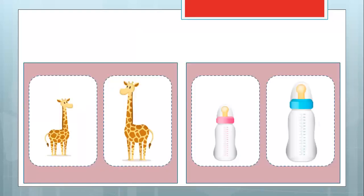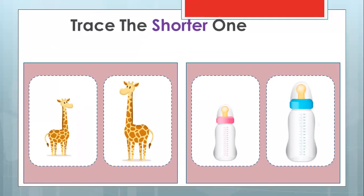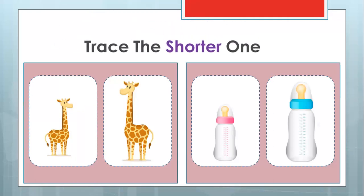Since we are talking about long and short, tall and short, let's look at this. It says trace the shorter one. So you have to trace the shorter one. Look at the two giraffes — they look huge.